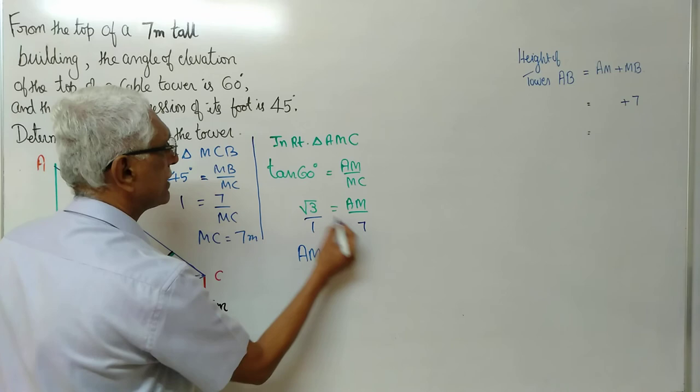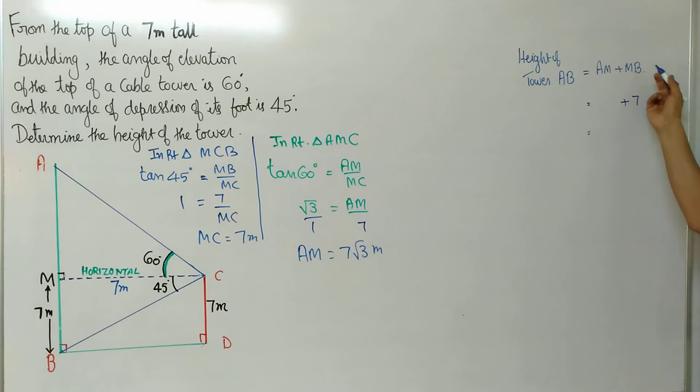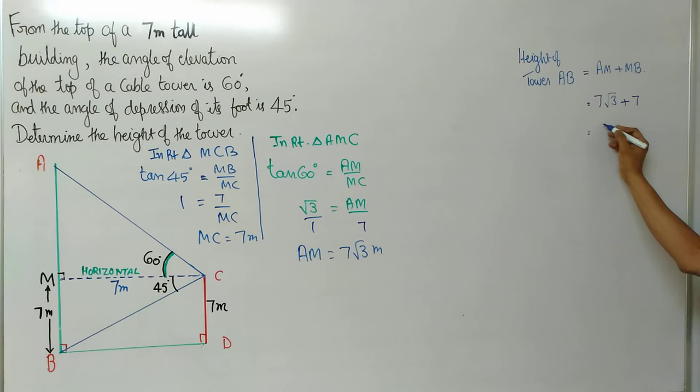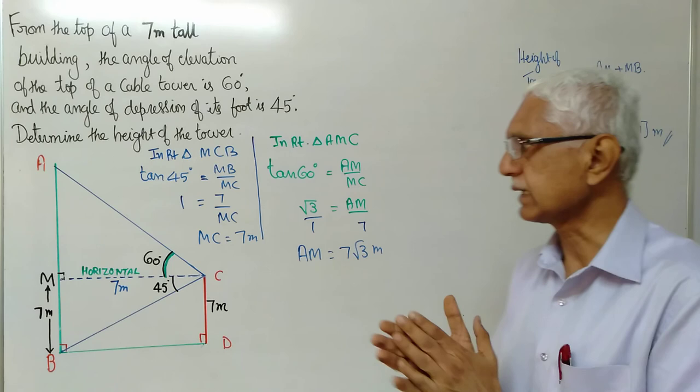Therefore height of the tower is AM plus MB. Please observe, it is AM plus MB. AM is equal to 7 root 3. MB is 7. 7 is common. Root 3 plus 1 meter. So the height of the cable tower is 7 into root 3 plus 1 meter. This is how you need to go.